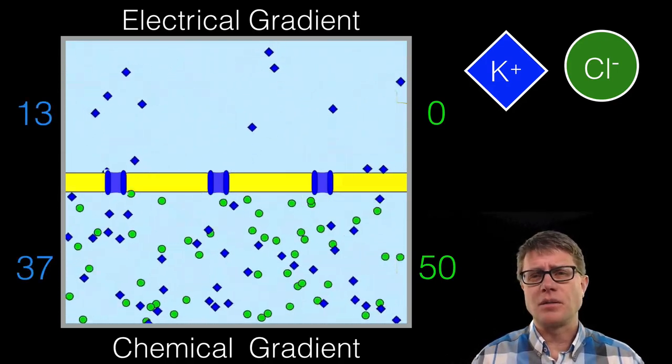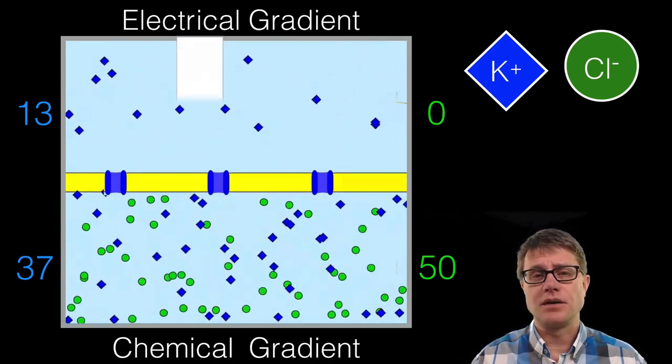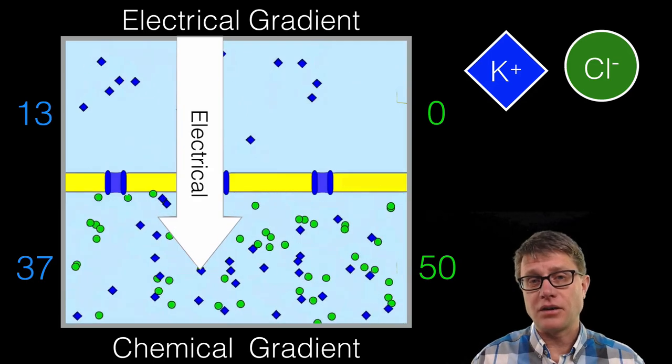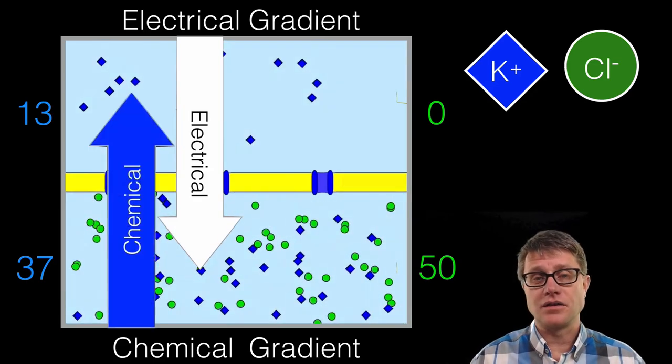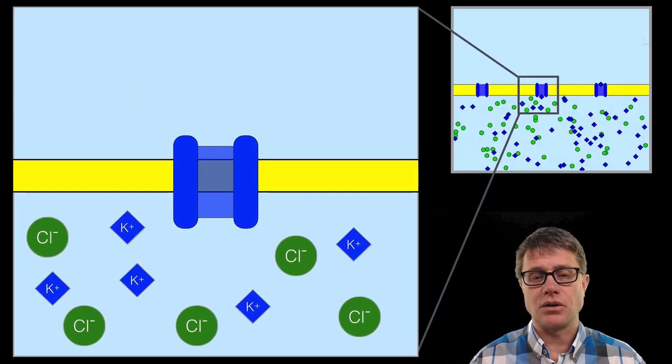So it is almost like there is a magical force that is pushing them in the other direction from the top to the bottom. And that is the electrical gradient. And it is counteracting that chemical gradient. And it is the combination of those two that is the electrochemical gradient. Let us zoom into that membrane and I will show you what is going on.